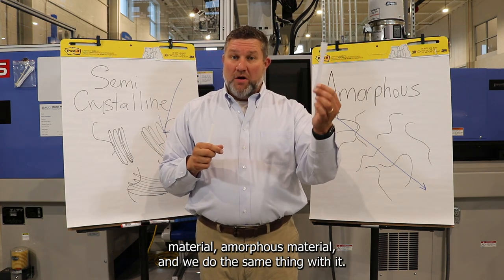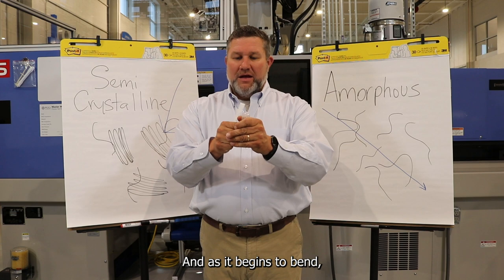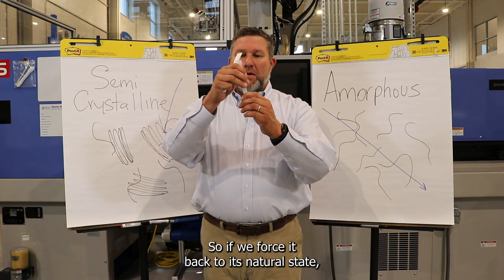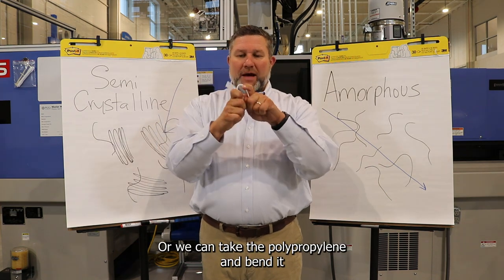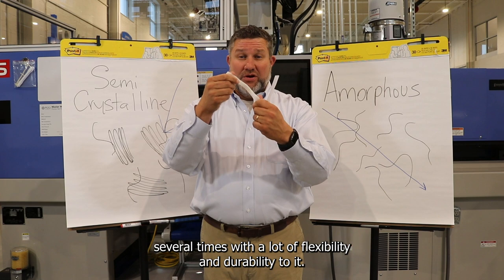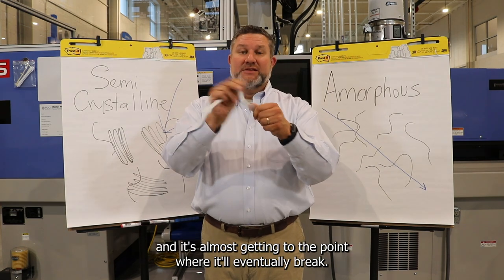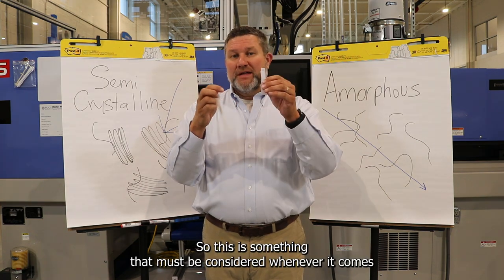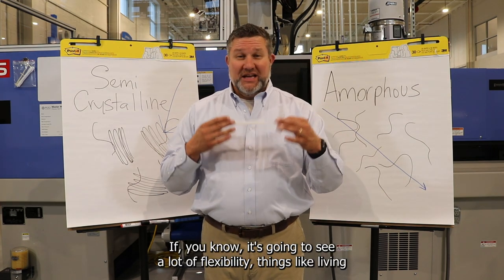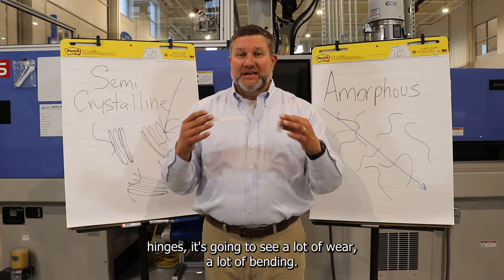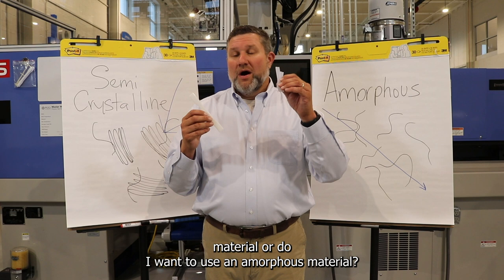Now we take our polycarbonate material, our amorphous material, and do the same thing. First of all, it's very hard to bend, and as it begins to bend we can see that it doesn't want to go back to its natural state. If we force it back, we can see a lot of stress and tearing within the bar. We can take the polypropylene and bend it several times with a lot of flexibility and durability, whereas if we bend the polycarbonate several times it's almost getting to the point where it will eventually break. This is something that must be considered when deciding what application the material will be used for. If it's going to see a lot of flexibility — things like living hinges, a lot of wear and bending — you've got to decide whether to use a semi-crystalline or an amorphous material.